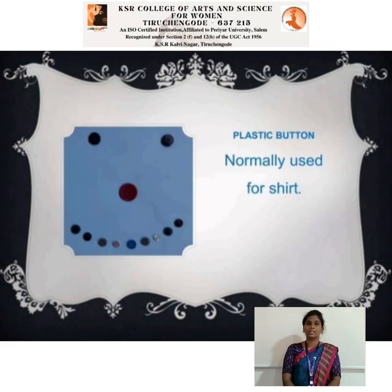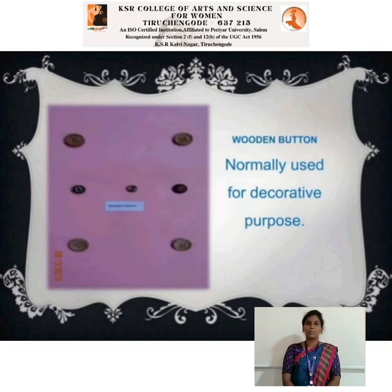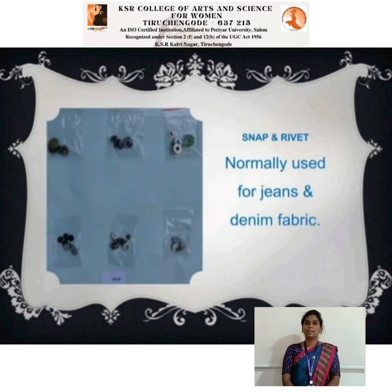Plastic buttons are normally used for shirts. Metal buttons are normally used for denim or heavy fabrics. Buff buttons are normally used for decorative purposes only. Snap and rivet buttons are normally used for jeans and denim fabrics.